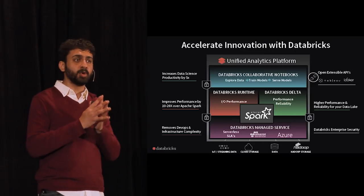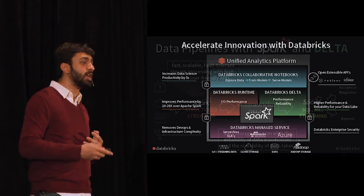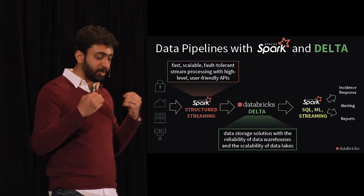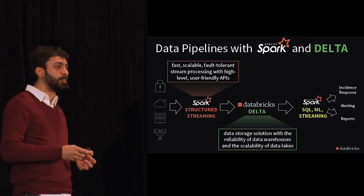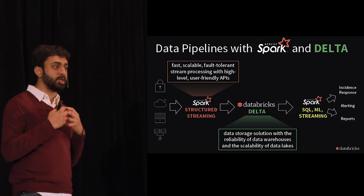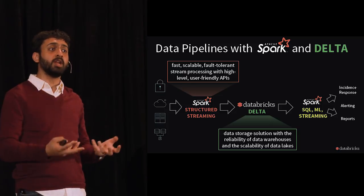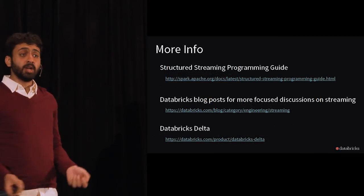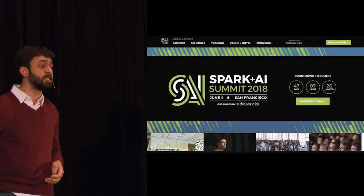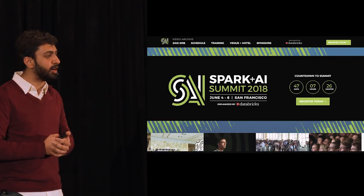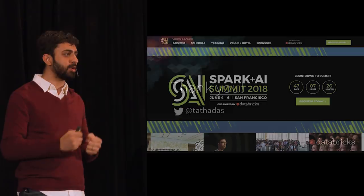To summarize: Databricks Delta is part of the Databricks unified analytics platform for all data processing needs. Structured Streaming is a fast, scalable, fault-tolerant processing engine with high-level user-friendly APIs, while Databricks Delta solves storage problems by providing the reliability of data warehouses and the scalability of data lakes. You can read more on our blogs, the Structured Streaming Programming Guide, and the Databricks Delta website. I also highly encourage you to come to the Spark plus AI Summit, June 4th to 6th.